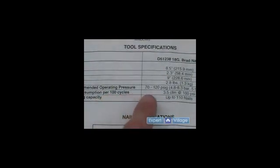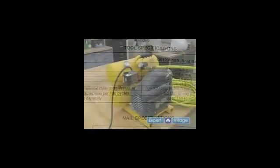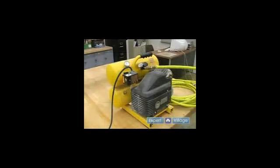You always want to reference the user's manual when looking for the operating pressure. On this tool's manual, the operating pressure is between 70 and 120. With air compressors, you want to make sure that you never inflate small low pressure objects such as children's toys, footballs or basketballs or anything like that.